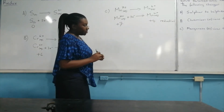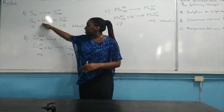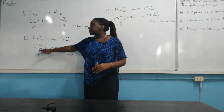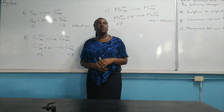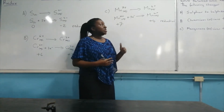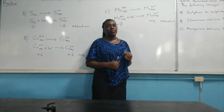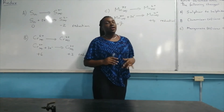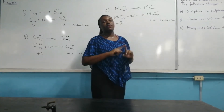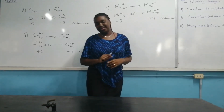There is another thing you must note: whenever a reduction process is taking place, the electrons are always added to the left-hand side of the equation. Whenever you have an oxidation process, the electrons are added to the right-hand side.